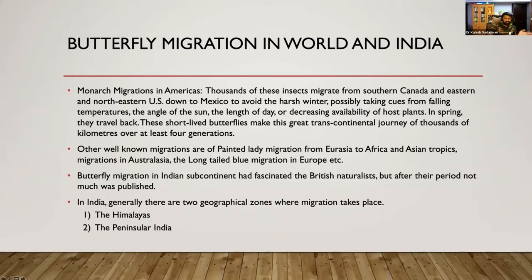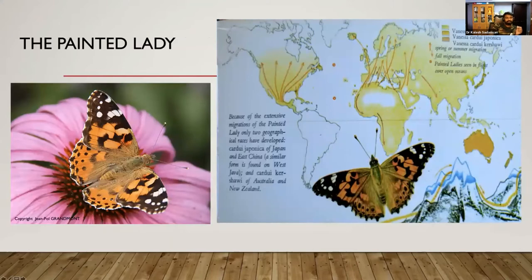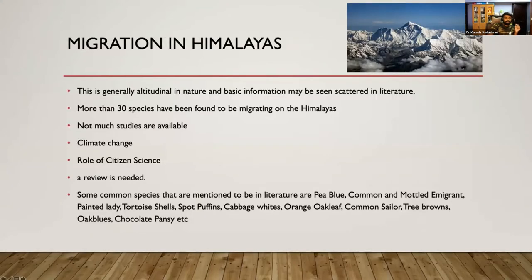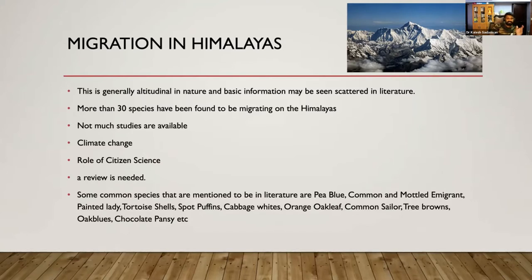The earliest studies of migration in India were done by British naturalists. The first record of migration from India was in 1830, but not many details are available. Then comes the time of Aitken, who described migration happening in Maharashtra, published in the BNHS journal. There are many papers by British naturalists in BNHS describing migration details. There are also two major regions in India where migration is notable for study: the Himalayas and the Peninsula. In the Himalayas, more than 30 species have been noted migrating, generally altitudinal in nature — butterflies moving from low to high elevation and vice versa depending on season. There is a definite role for citizen science in studying altitudinal distribution.